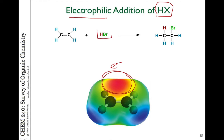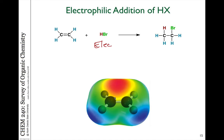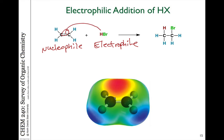HBr is one example of an electrophile. HBr has a polarized bond, so the hydrogen is very positively charged, and this is why it acts as an acid. So this is our electrophile — the electron-loving species, something that's deficient and looking for electrons. And the nucleophile, the nucleus-loving species, is looking for something that is deficient of electrons — it has electrons it wants to give up.